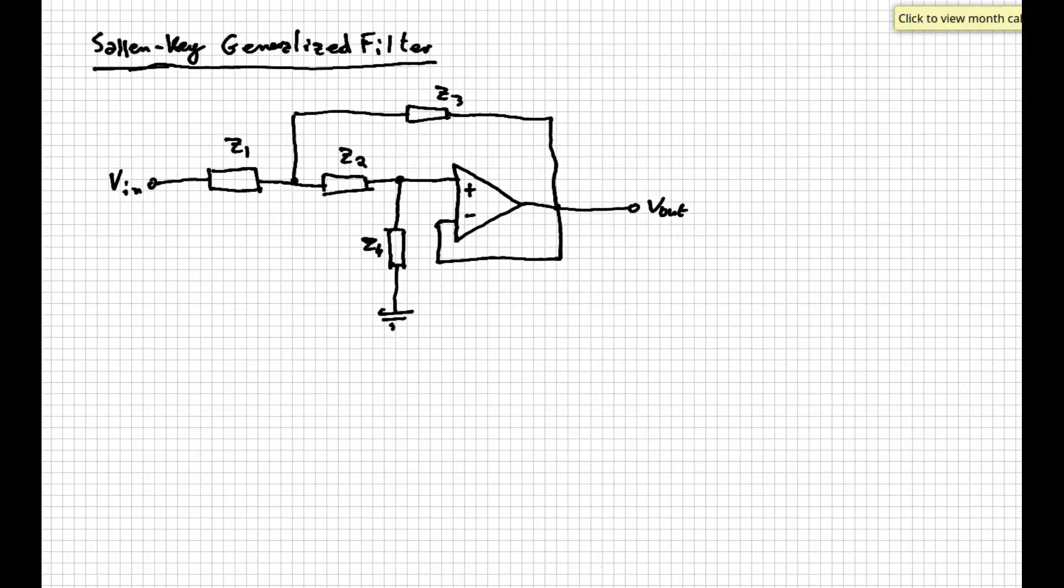Given the four impedances, we can analyze the circuit in a generalized way to find its transfer function, which we will see it is of the second order. Once this analysis is completed, we can specify the nature of the impedances and see how the general transfer function changes and how the filter operates in the particular phases.